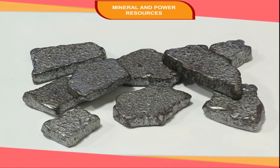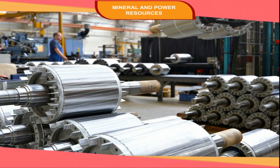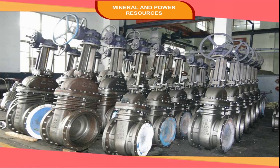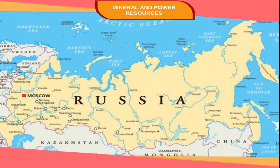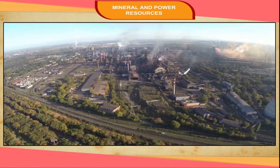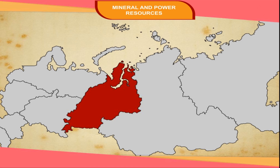Iron is the foremost abundant element in the earth's crust. It is widely used all over the world for making machinery for industries. Strength, hardness, ductility, and magnetic properties are some of its unique qualities. Iron deposits are almost widely distributed in all the continents. Russia is the leading producer of iron ore in the world. The main iron ore fields are near Moscow and in Krivoi Rog. Siberia and the Ural regions are also rich in iron ore mining.